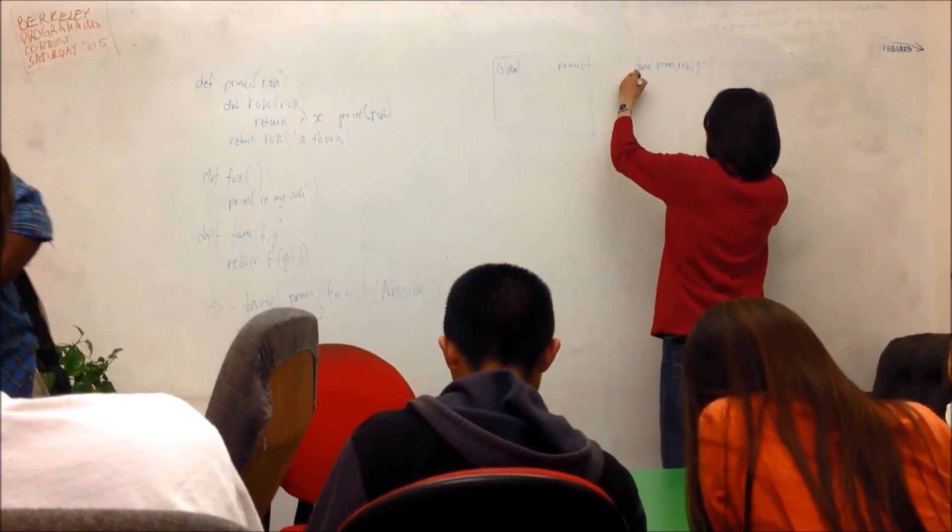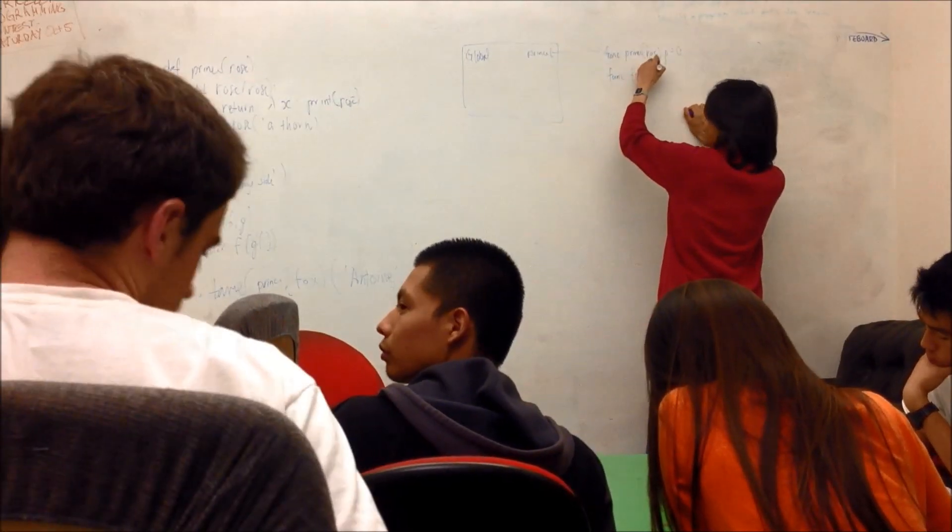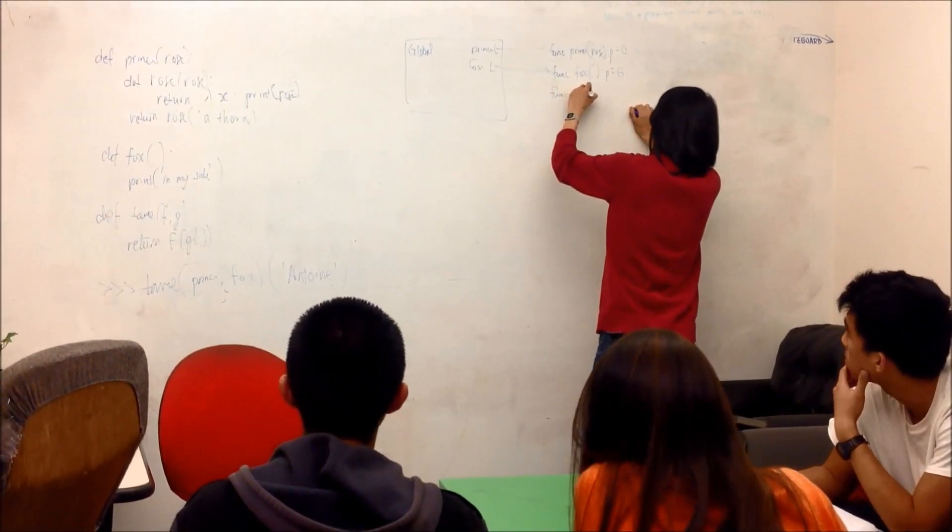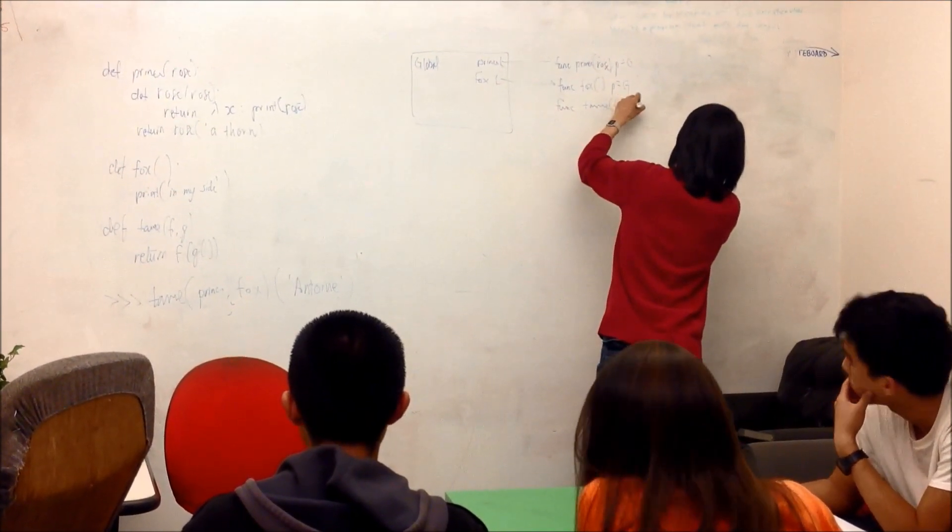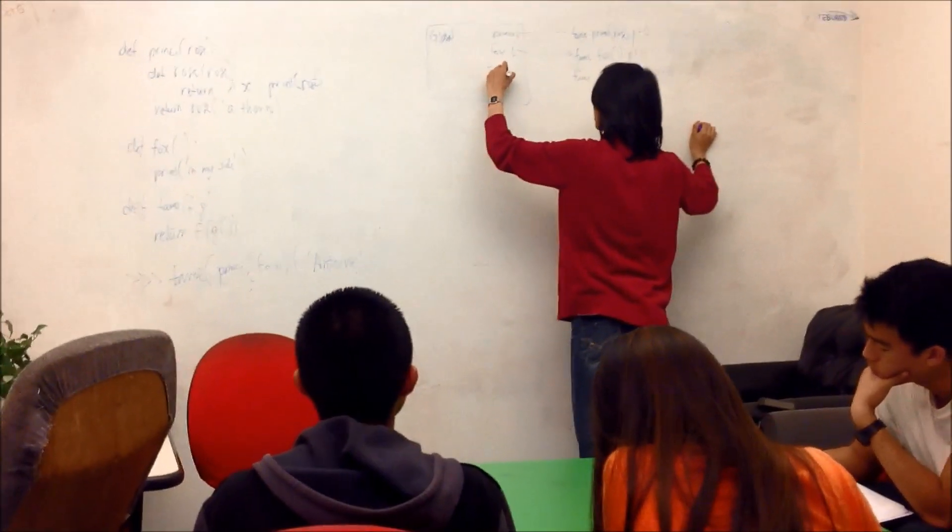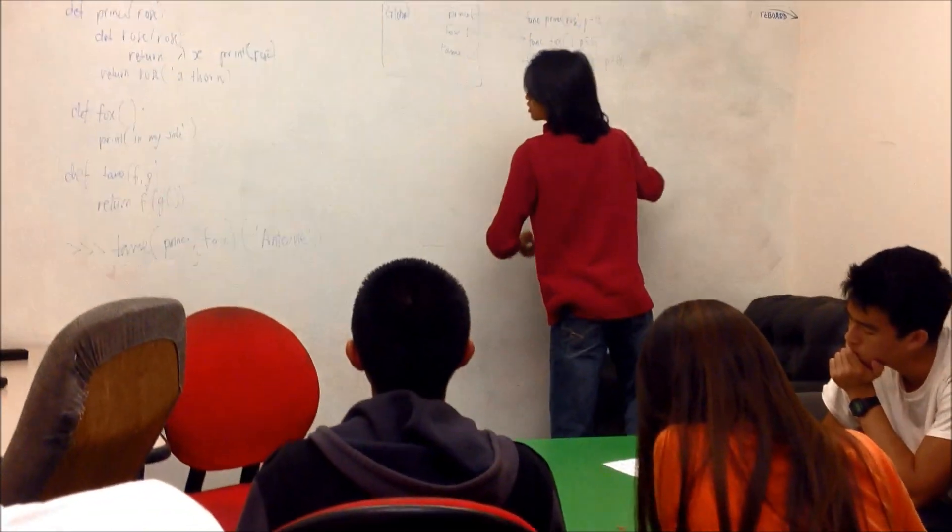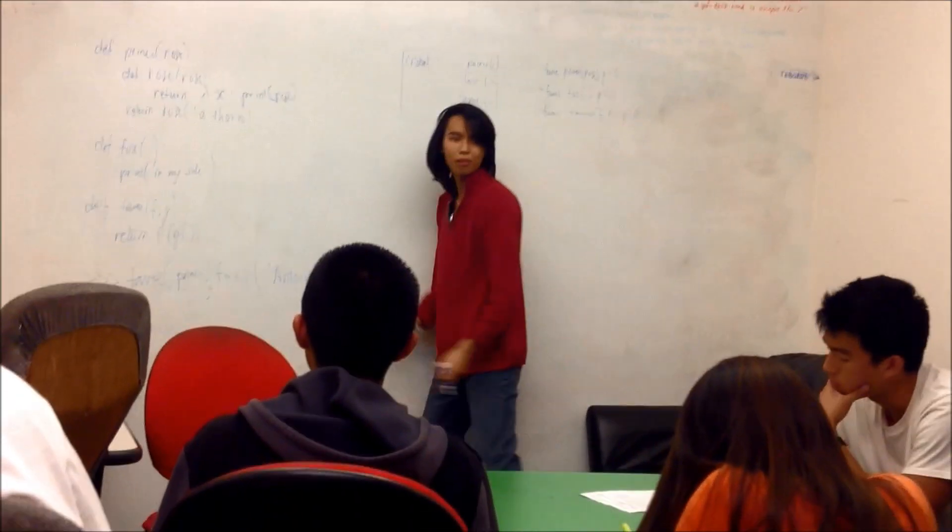Next I say define function fox, which takes in nothing, whose parent is global. Let's say fox, which looks like this. Then I say define a function tame, which takes in an f and a g. The parent is equal to global. And tame points to this. And then I'm out of functions to define. Then I say I have to figure this out. Everyone can see the board, right?